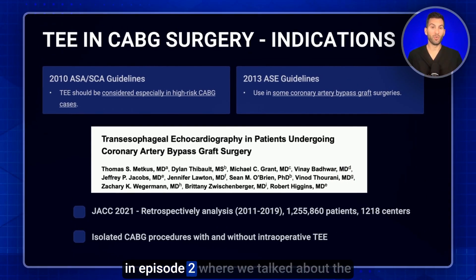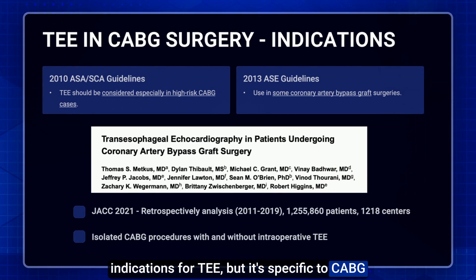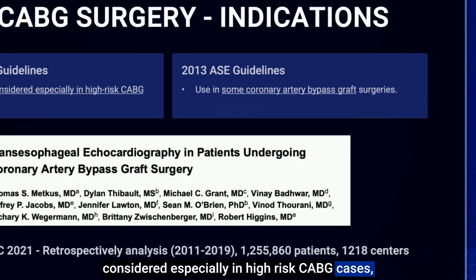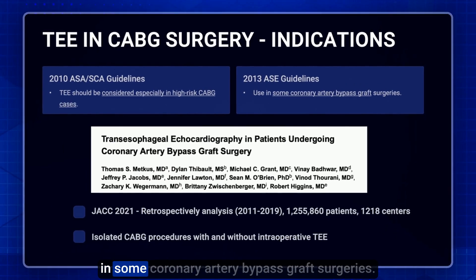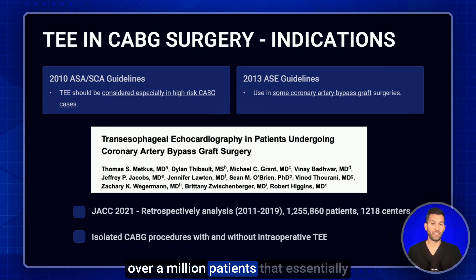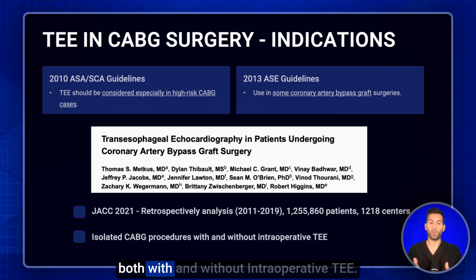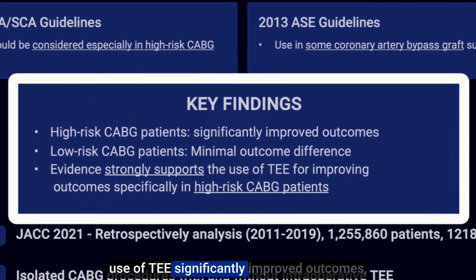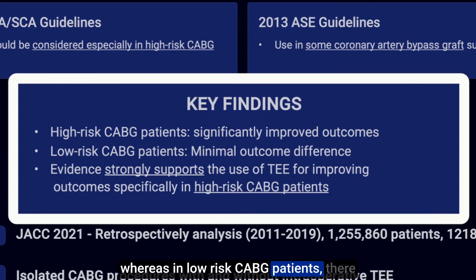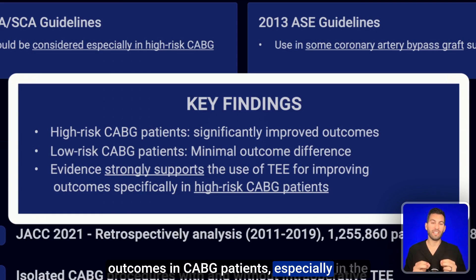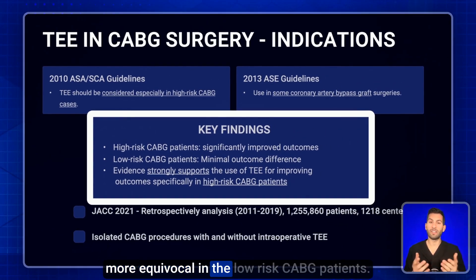In the 2010 ASA guidelines, TEE should be considered especially in high-risk cabbage cases, and in the 2013 ASA guidelines, it's to be used in some coronary artery bypass graft surgeries. A key paper from the Journal of American College of Cardiology in 2021, spanning many years, over a thousand centers, and over a million patients, looked at isolated cabbage procedures with and without intraoperative TEE. The findings showed that in high-risk cabbage patients, TEE significantly improved outcomes, whereas in low-risk patients, there was minimal benefit — strongly supporting TEE use in high-risk cabbage cases.